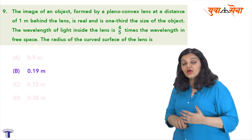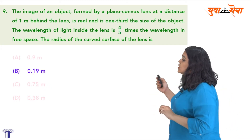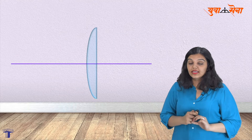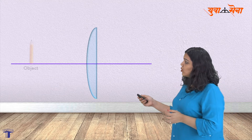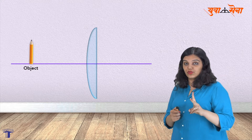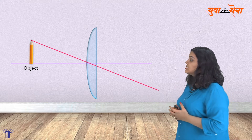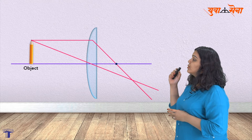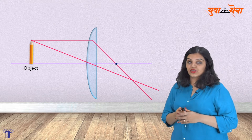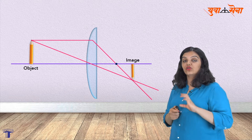The first thing to do is to recall how we can find the location and the description of the image formed by a plano-convex lens. To do that we draw a ray diagram. We have a plano-convex lens, and I have an object placed at some distance from the lens. I'm going to draw a ray diagram using two types of rays — the first ray passing through the optical center, and the second one parallel to the optical axis, which then passes through the focus after refraction. These two rays meet at a point, and that point is the location of the image.